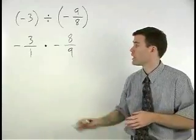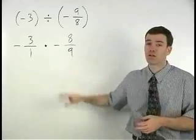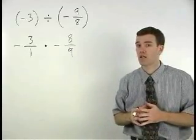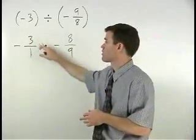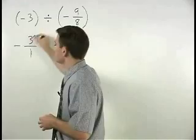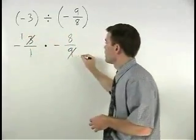Remember, before multiplying two fractions together, you should always try to cross-cancel. And notice that here we can cross-cancel the 3 and 9 to 1 and 3.